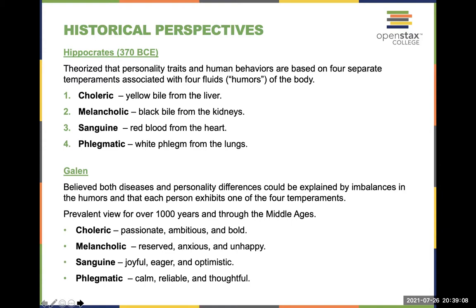Then there's melancholic — black bile from the kidneys. You can still hear the word 'melancholy' used today. Next is sanguine — red blood from the heart. And finally phlegmatic — white phlegm from the lungs. That was Hippocrates.